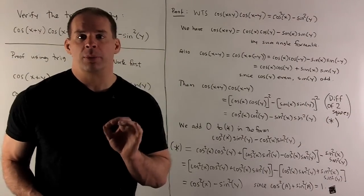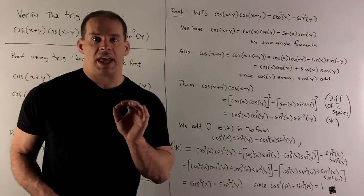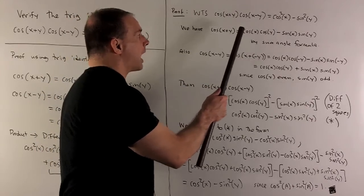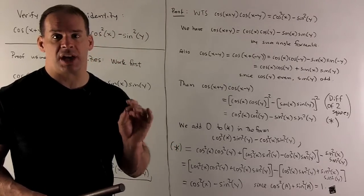Next step, we write out the proof of our identity using all the details. First line, I just rewrite what we're trying to prove. So, I want to show cosine x plus y, cosine x minus y equals cosine squared x minus sine squared y.